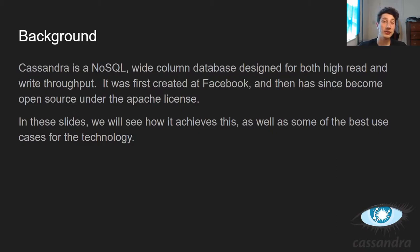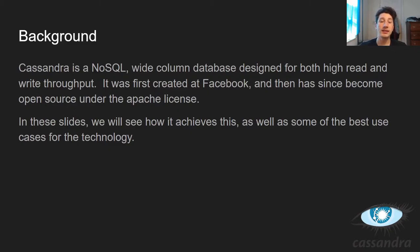Cassandra was created at Facebook, modeled after things like Amazon's Dynamo database and Google's Bigtable, and it's since become open source under the Apache license. Really high write throughput, NoSQL database — pretty simple stuff. Now I'm going to get into how it does all of that, because it builds upon all the concepts we've discussed so far.